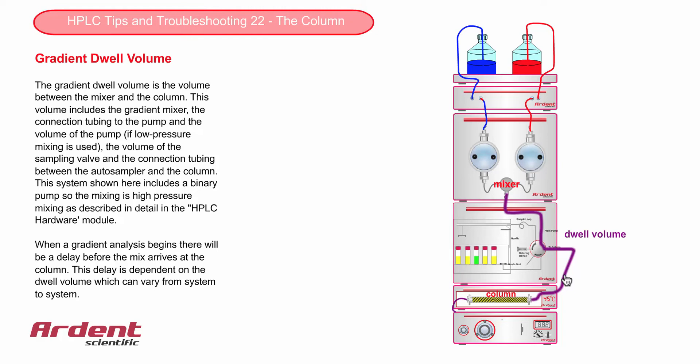One of the biggest reasons for poor reproducibility between HPLC systems is because of different dwell volumes. Even if the same column is used on a supposedly identical system, if the length and diameter of the lines is different, this can cause different selectivity, causing changes in resolution and even peak swapping from HPLC system to system.